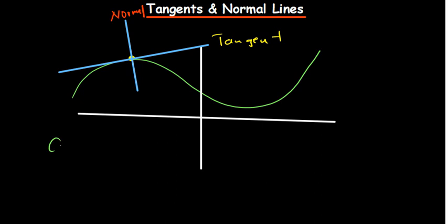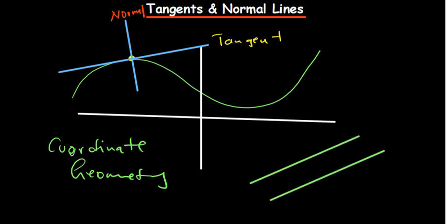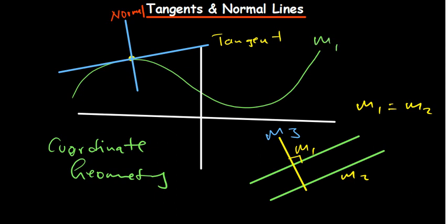Coordinate geometry is very important here. When you talk about linear equations, you understand that when two lines are parallel, their steepness is the same — the gradient of two parallel lines are equal. And for perpendicular lines, if I introduce a line perpendicular meaning they make an angle of 90 degrees, taking that gradient to be M3, their product M1 times M3 is equal to negative 1.